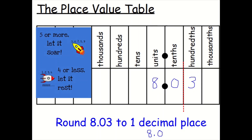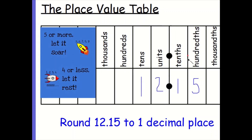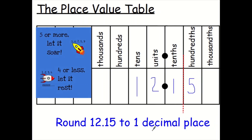One more example to one decimal place: 12.15. I only want one thing after the decimal point, so I ask: does this number affect my one decimal place? Yes, it does — because it's five or more, so it lets it soar up to 12.2.